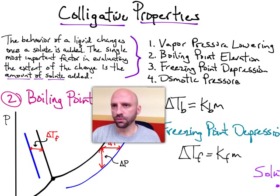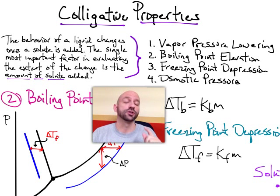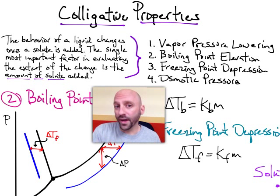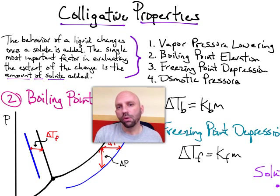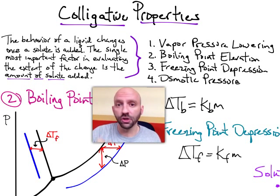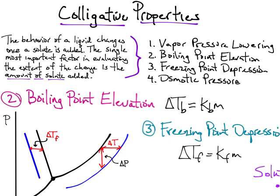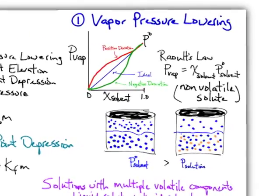So all of these four properties — vapor pressure lowering, boiling point elevation, freezing point depression, osmotic pressure — they're really not going to care so much about what it is that you use as a solute, but they're going to care about mostly how much solute particles are in the system. So we're going to start here with vapor pressure lowering and move over to take a look at it.